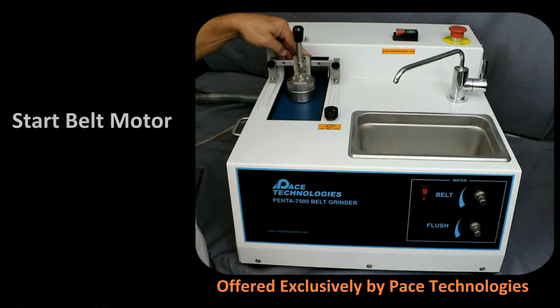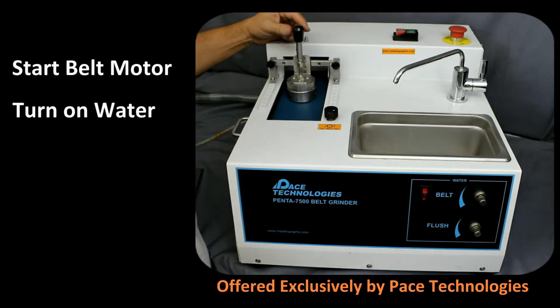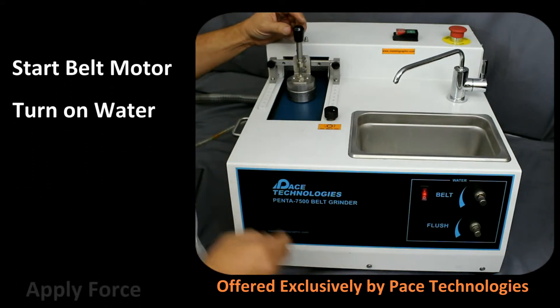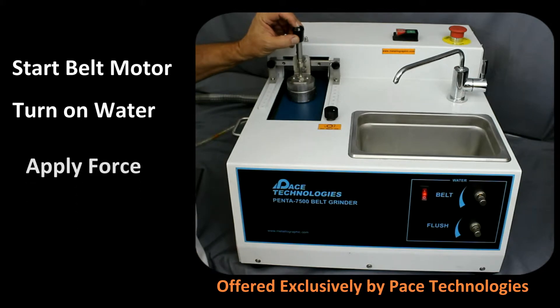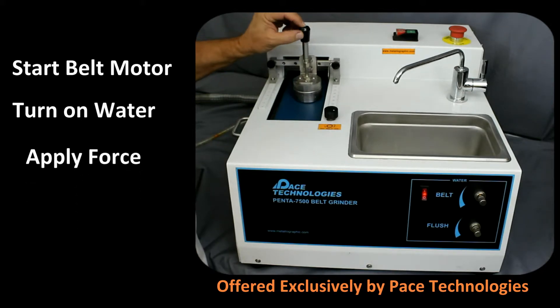Start the belt grinder and water flow. Position the sample on the belt and apply the force through the loading shaft. Although the tracking of the sample on the belt can be moved, it would be better to hold it in place for each grind for better control.